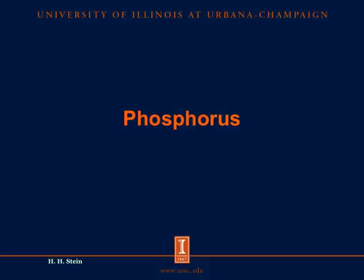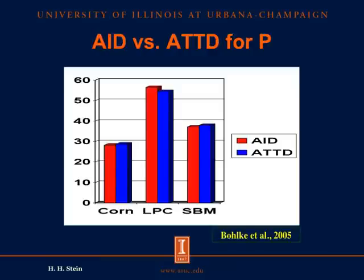For phosphorus, the situation is a little different than for amino acids, because there is no difference between apparent ileal digestibility and apparent total tract digestibility. Comparing red bars for apparent ileal digestibility and blue bars for total tract digestibility across three ingredients — corn, low phytate corn, and soybean meal — we see absolutely no difference between ileal and total tract digestibility for any of them. Therefore, we usually determine apparent total tract digestibility for phosphorus without needing to insert cannulas, and we typically do not determine ileal digestibility for phosphorus.